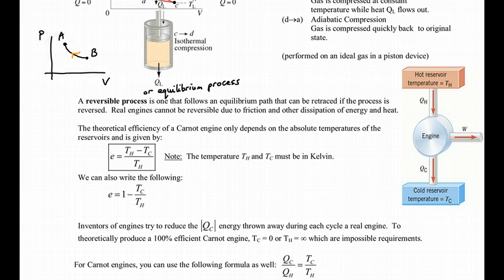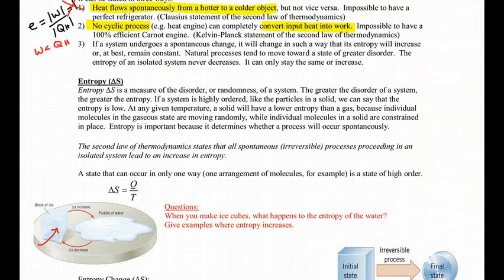A reversible process is an idealized process that can never really be attained precisely in the real world. If you go back to page 12 of our notes and recall our ice cube example where the ice melted into this puddle of water...